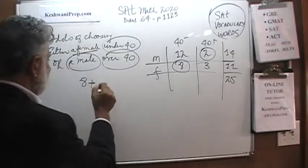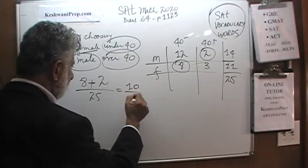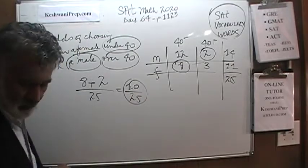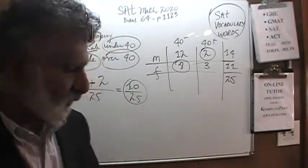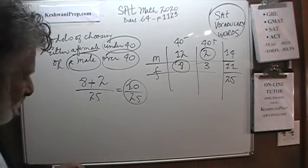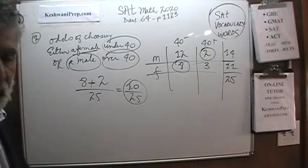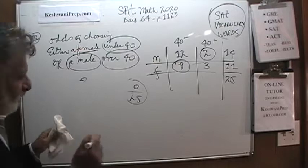Or the person that we picked at random is a guy who happens to be over 40, and there are 2 guys over 40, out of a grand total of 25. So there are 10 over 25. As I said before, sometimes I end up explaining way too much for a simple thing. It is number 2 on a scale of 1 through 30, of course it's very easy. 10 out of 25 is the answer. The answer is B.